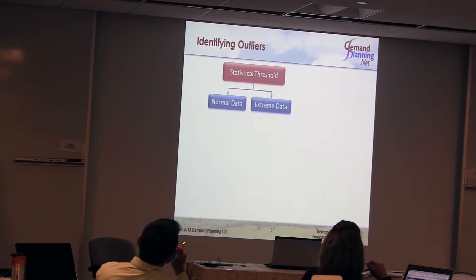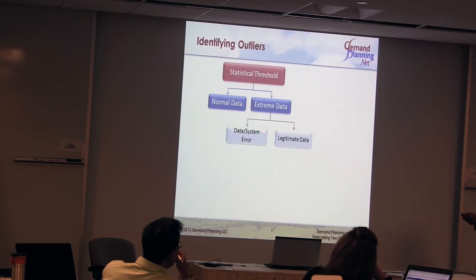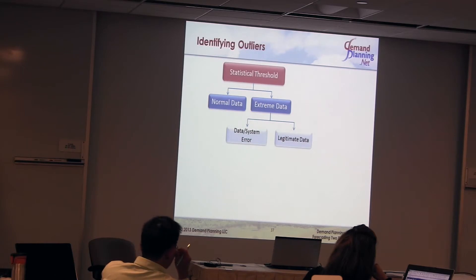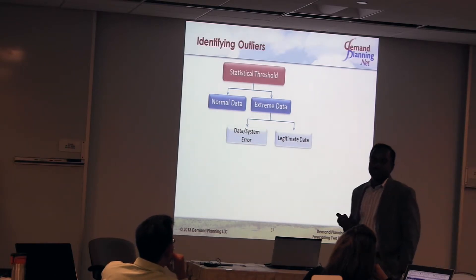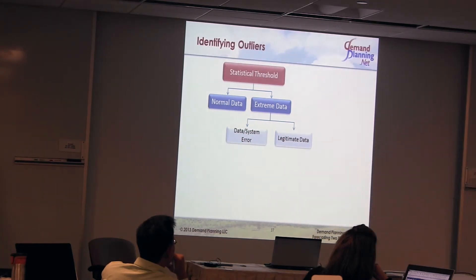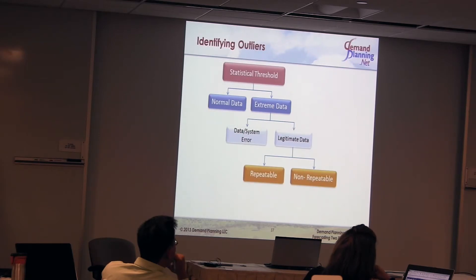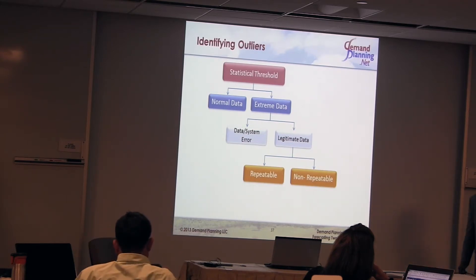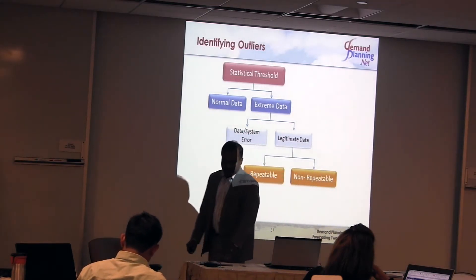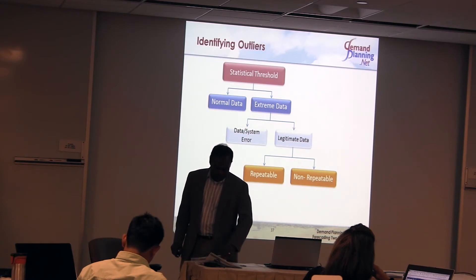You establish a statistical threshold, then look at historical data and ask: is this normal or extreme? If it is extreme, is it a data system error or a legitimate event? Maybe the systems group had an issue — a disk didn't spin overnight and the data posted as zero. Fix the system issue if that's the case. If it's legitimate data, then you need to investigate: is this repeatable or non-repeatable? Meaning, is it some type of promotion or extraordinary event that may or may not happen in the future?